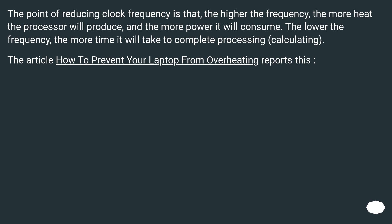The point of reducing clock frequency is that the higher the frequency, the more heat the processor will produce and the more power it will consume. The lower the frequency, the more time it will take to complete processing and calculations.